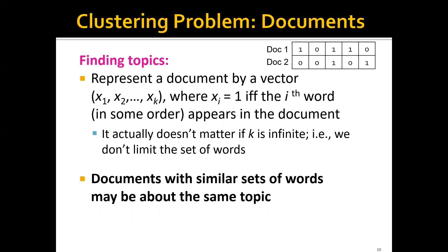A different problem, which is also very interesting, is to find topics among a large collection of documents. We can represent each document using a vector, where each entry represents a word — more specifically, whether that word appears in the document. For example, with a small vocabulary of five words, if document one has words one, three, and four appearing, we use a binary vector to represent it. Similarly for document two. Documents with a similar set of words may be about the same topic.